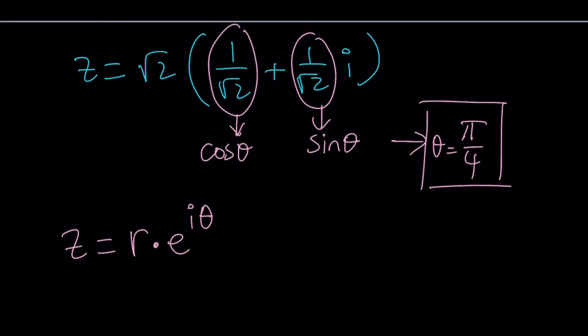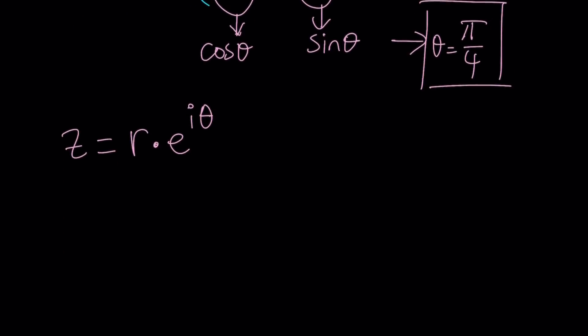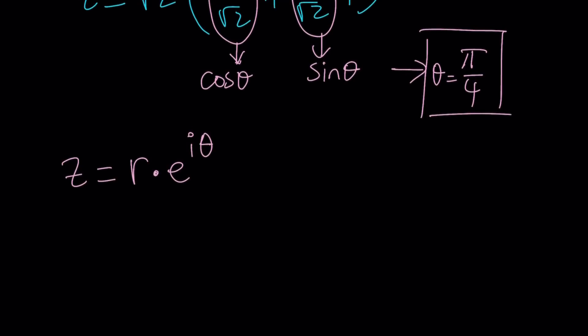And r is the modulus or the absolute value. If you want a definition for r: if your number z is a + bi, then r or |z| is going to be the square root of a squared plus b squared. From the Pythagorean theorem, the distance formula. I got everything I need, so let's put it together.